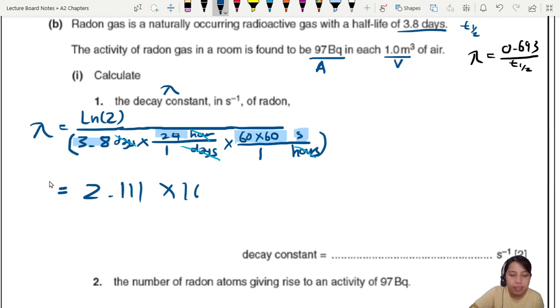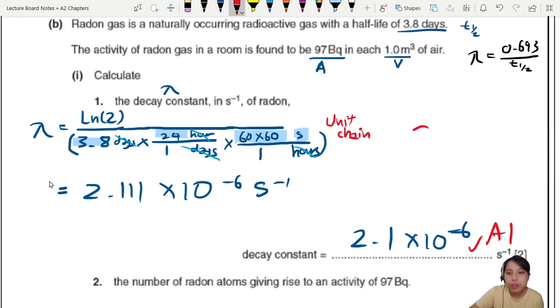Don't have to write out this whole working. So 2.111 is your answer, times 10 negative 6. Final answer, 2.1 times 10 negative 6. This unit chain is helpful if you don't remember formulas or you're not very sure how to deal with unit conversions. So this one is A1. And if you plug into the equation, that's C1. This is our golden equation in the data formula sheet.